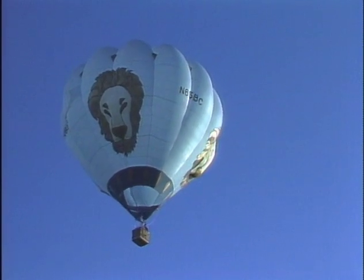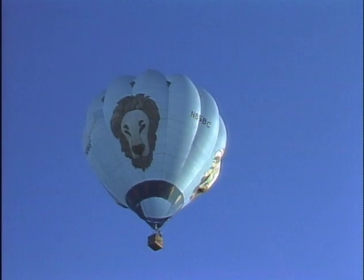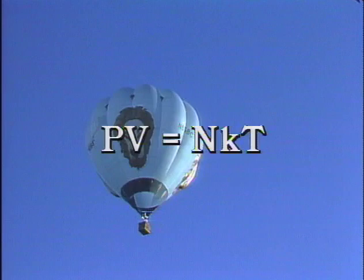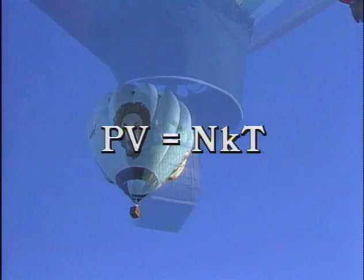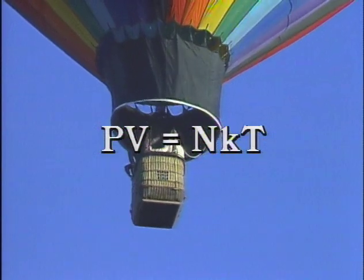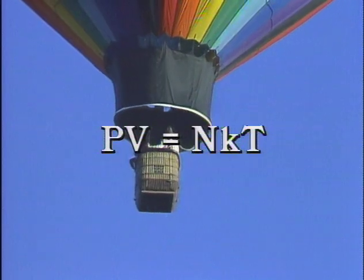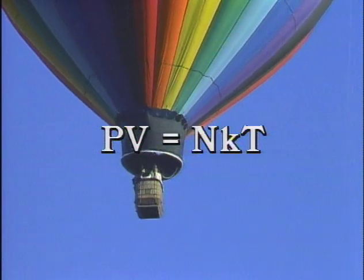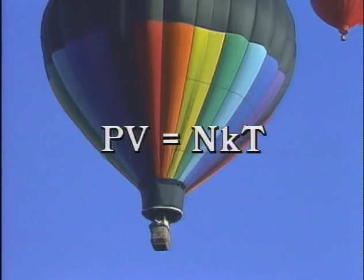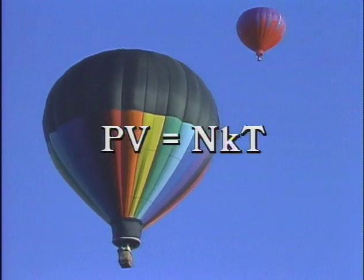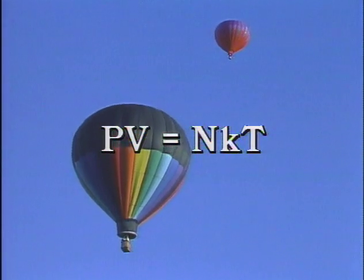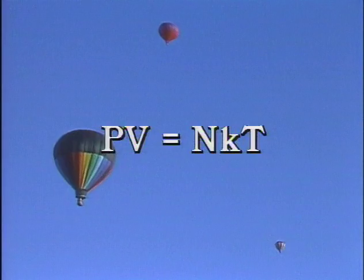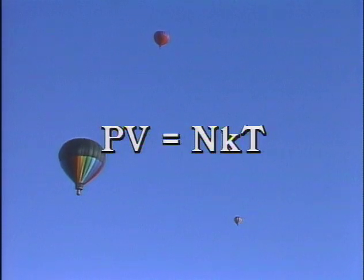No matter where they rise or fall, all temperatures are related to the pressure of the gas by the equation PV equals NkT. This equation, vital in both physics and chemistry, is called the ideal gas law. Not all gases are ideal, but the ideal gas law nonetheless accurately describes how numerous real gases behave. More than a mere definition of the absolute temperature scale, it expresses both Boyle's law and Charles's law, and it leads to a kinetic theory of temperature.